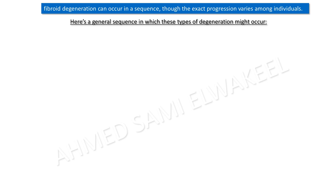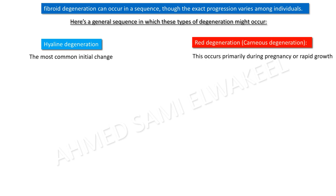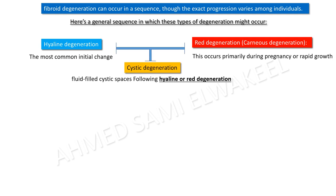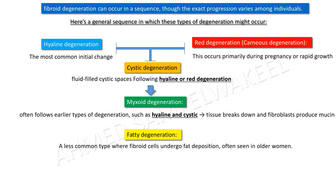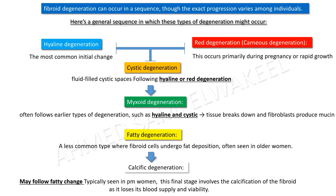The general sequence of degeneration: H — hyaline degeneration, the most common initial change. A — atrophic. R — red degeneration, occurring primarily during pregnancy or rapid growth. M — myxomatous. N — necrotic. F — fatty degeneration, the least common type where fibroid cells undergo fat deposition. C — calcification, typically seen in post-menopausal women, the final stage where the fibroid loses its blood supply.